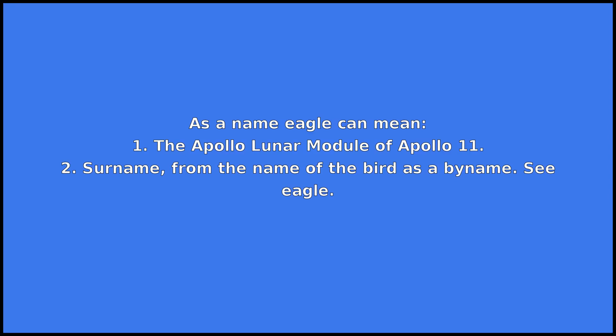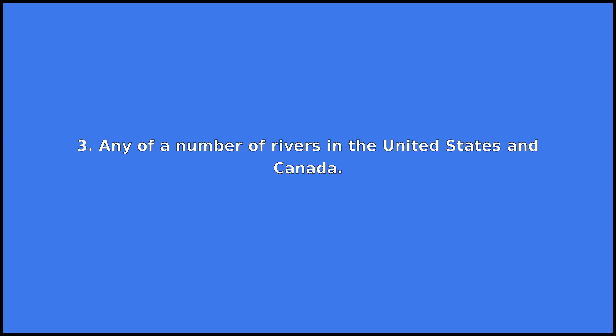As a name, eagle can mean: 1. The Apollo Lunar Module of Apollo 11. 2. Surname, from the name of the bird as a byname. See eagle. 3. Any of a number of rivers in the United States and Canada.